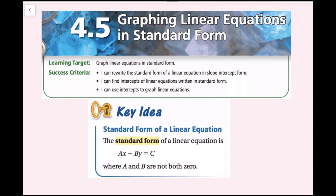The standard form of a linear equation is ax plus by equals c, where a and b are not both zero. One of these could be zero, but not both of them. a and b can both be positive or negative, and c can be positive or negative or zero. This plus would turn into a negative, and we'll see some examples coming up.